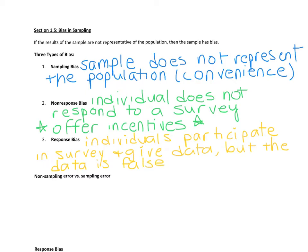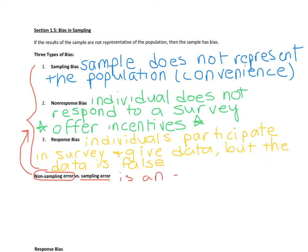Notice these types of bias happen in the sampling process — either it's a bad sample, the individuals don't participate, or when they do participate, the information they give is false. These are called non-sampling errors. Sampling bias, non-response bias, and response bias are all non-sampling errors. A sampling error, by contrast, is an error that almost always happens no matter how careful we are — it occurs whenever we use a sample.